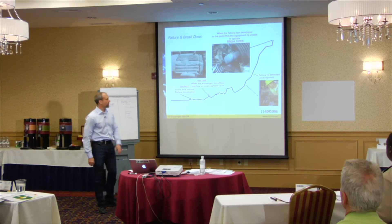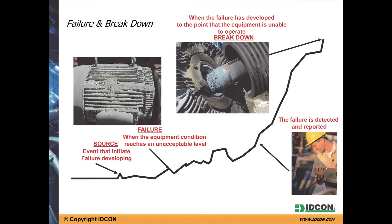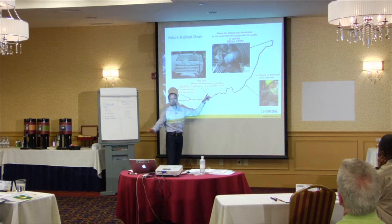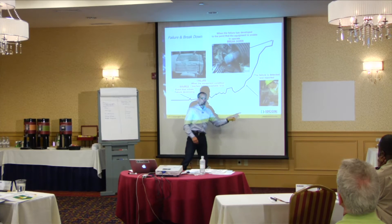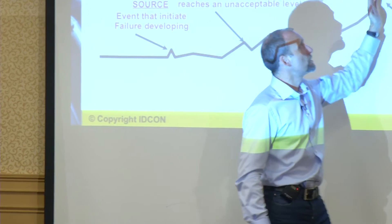When we talk about a breakdown or failure, we need definitions. We call failure when the equipment condition reaches an unacceptable level — too high a temperature, too high vibration, too small a flow — whatever it may be. It's still operating, or could be operating. That failure will then develop into a breakdown, where it stops functioning. So there's a time period from when you have a failure to a breakdown, and you want to do an inspection somewhere in that window to find the failure.